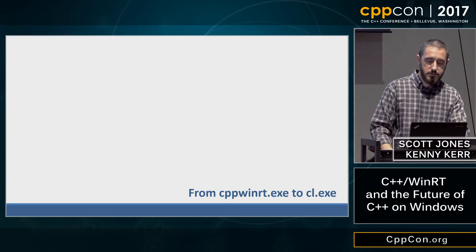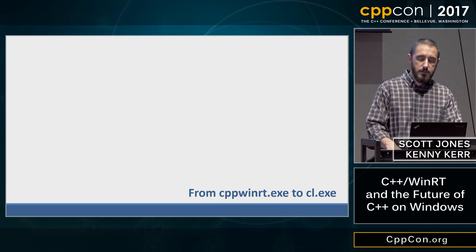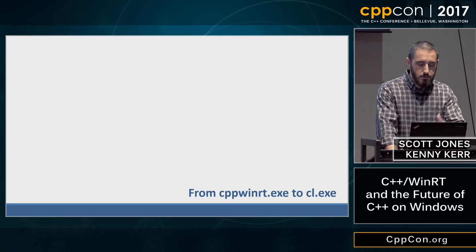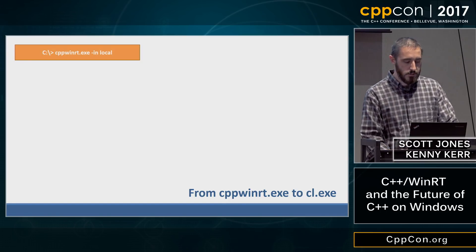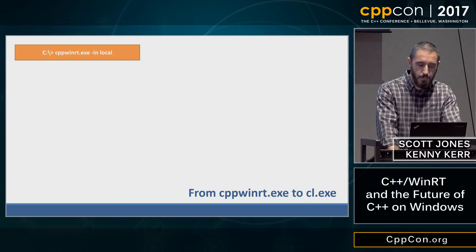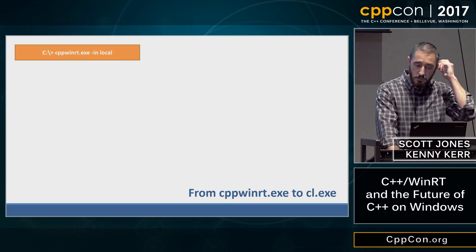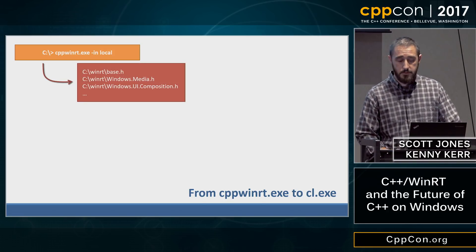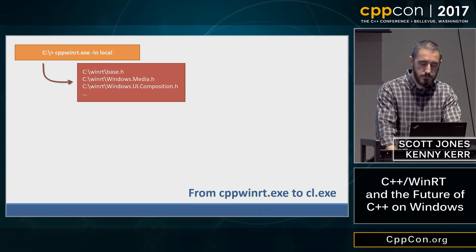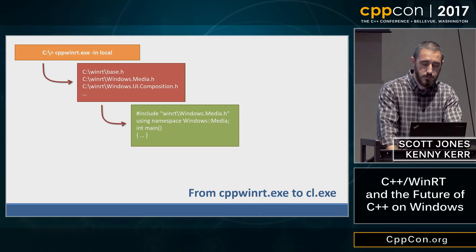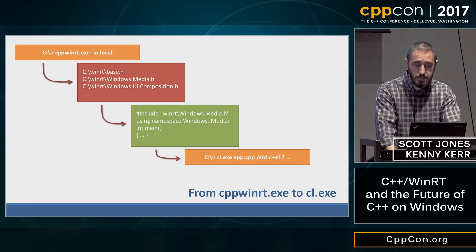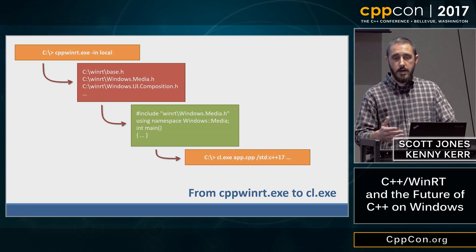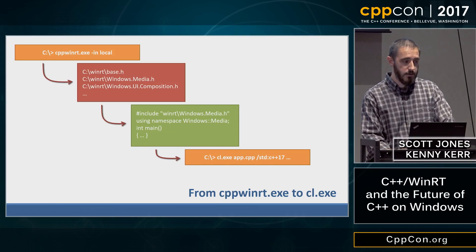Beyond just the library, we have tooling. In previous talks James McNellis and I talked a lot about the library and abstractions, but we avoided talking about the tooling because we weren't ready. The way it works is you have this tool called cppwinrt.exe — we call it a compiler because it converts from one thing to another. You run it with options like 'in' and 'local,' which takes all the metadata in your system's WinMetadata folder and produces a set of header files representing those APIs in modern C++. You simply hash-include into your C++ project and compile with Clang, CL, or whatever you prefer.